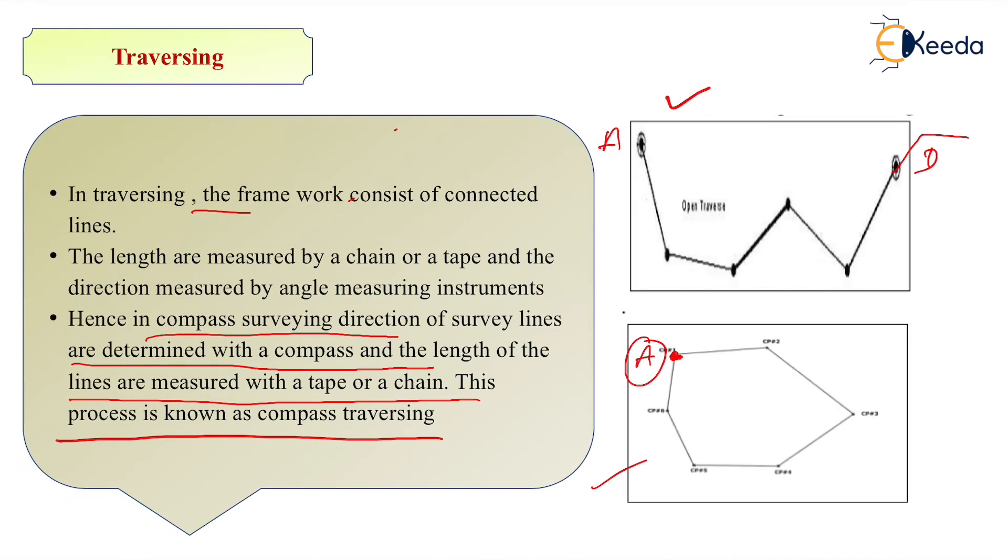That is known as closed traverse. So while running a traverse we have to establish main station points from where we will control the whole survey process. So these points are known as control points or main points.